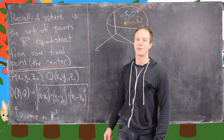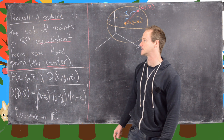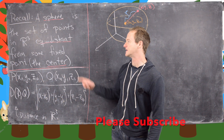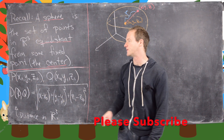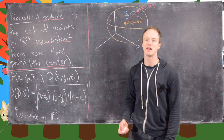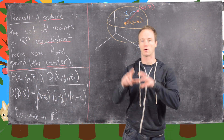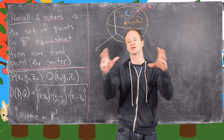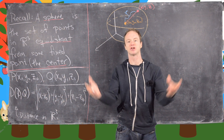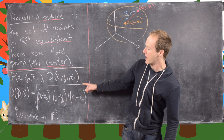Let's recall the proper definition of a sphere first. A sphere is a set of points in R3 that is equidistant from some fixed point, which we'll call the center. This is a two-sphere or a two-dimensional sphere because we're really just looking at the outside edge, which is a two-dimensional object.